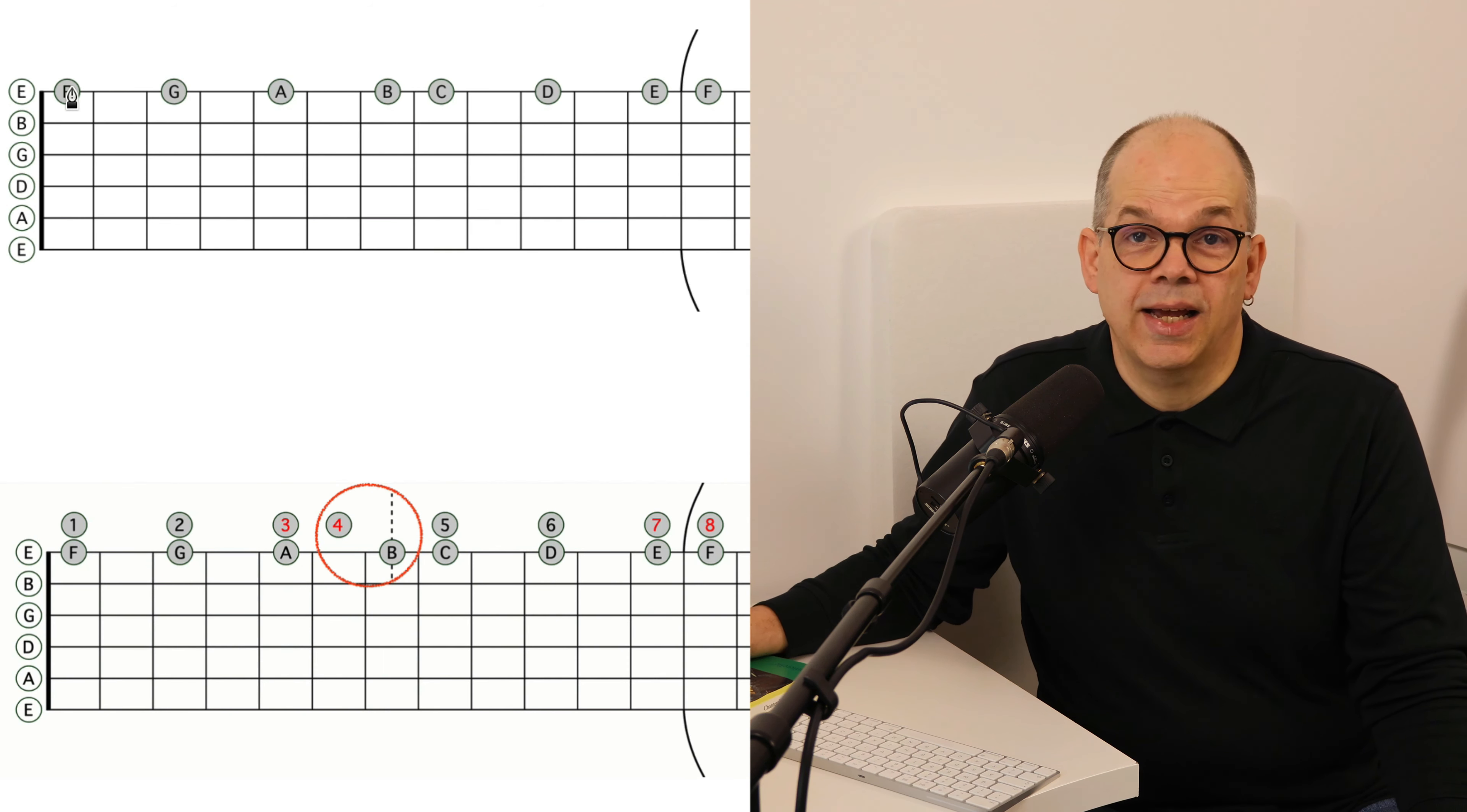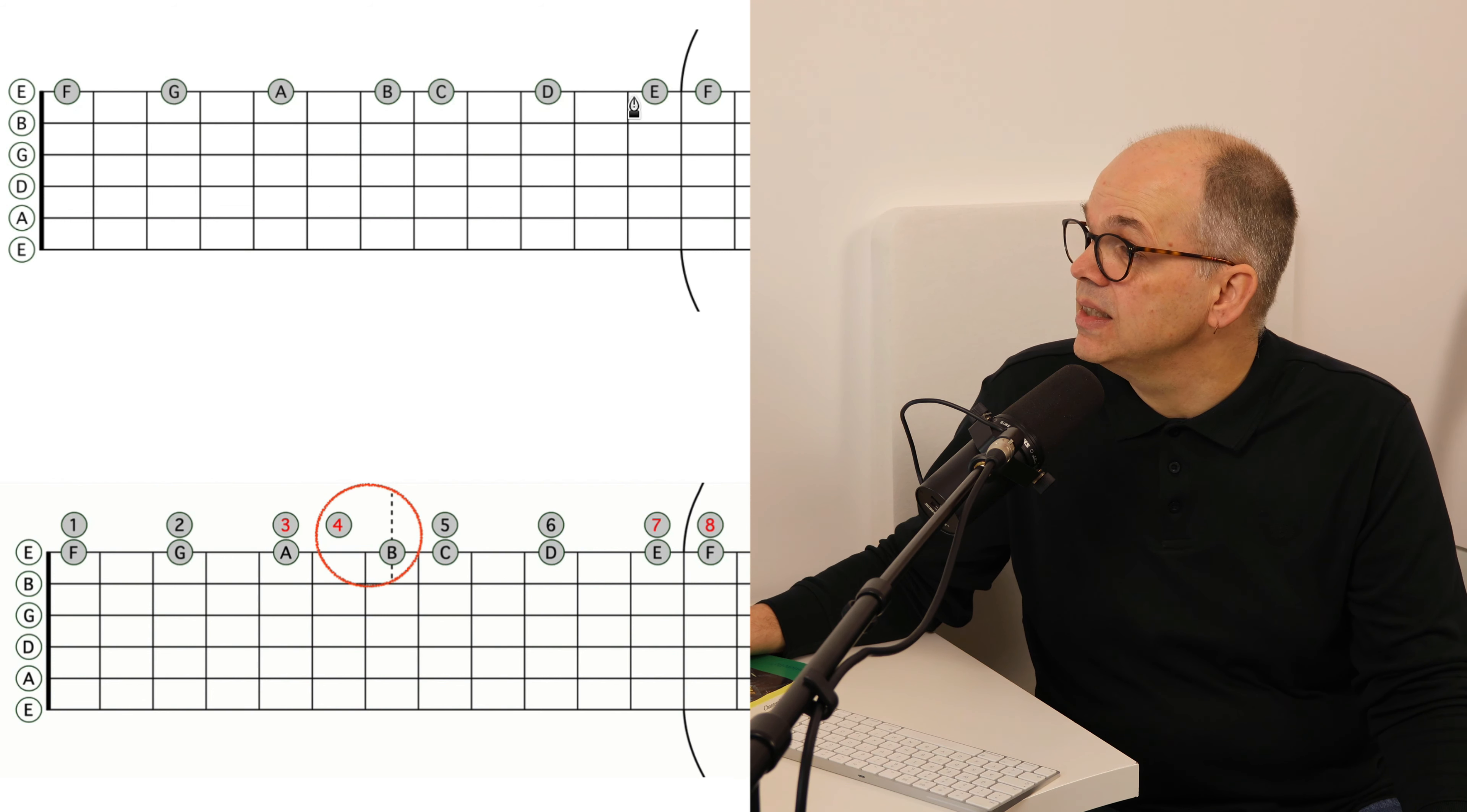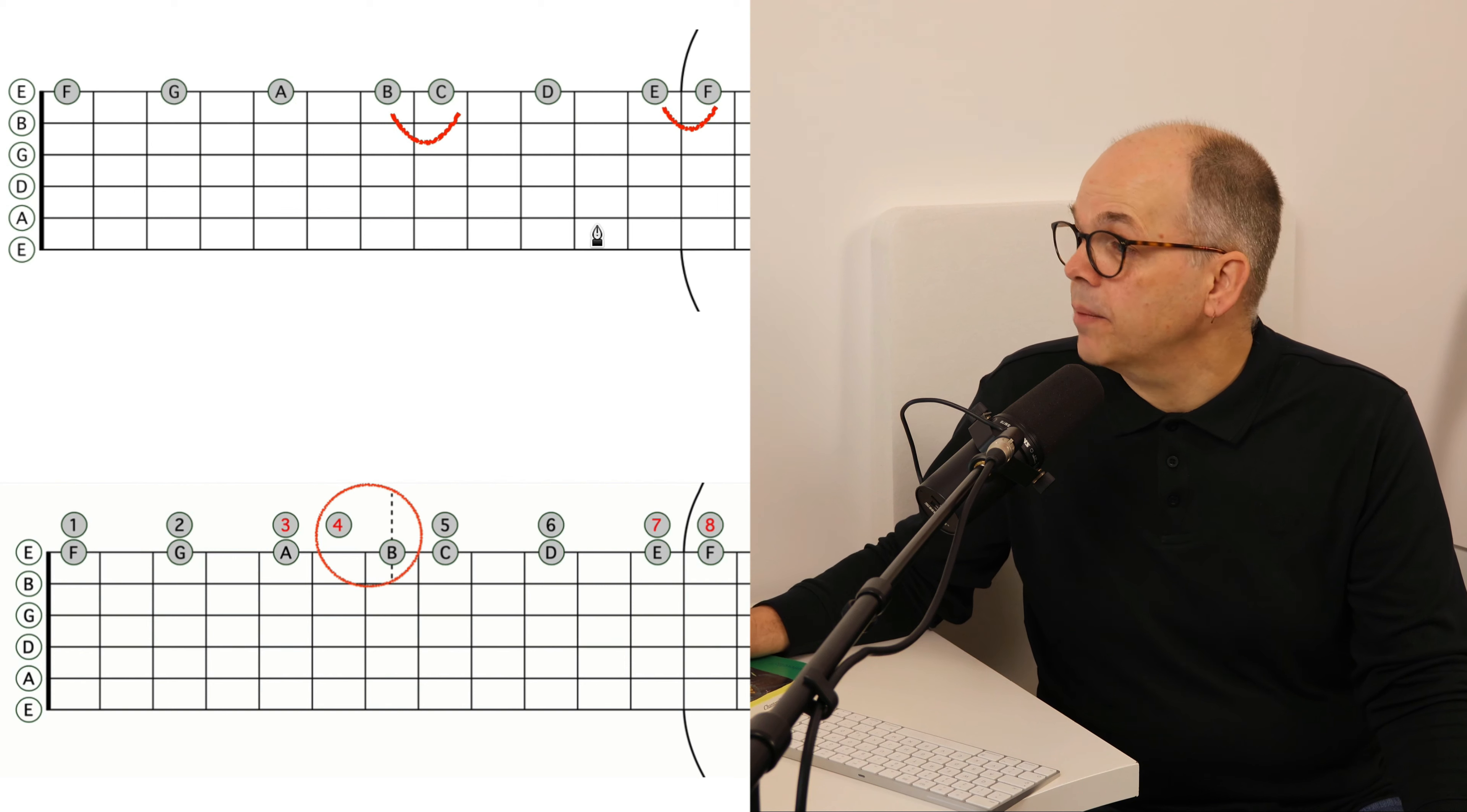Now what you see here are all the notes of the tone clock put on the first string. We have F, G, A, B, C, D, E and F. Here are the half steps and this is all the scale.